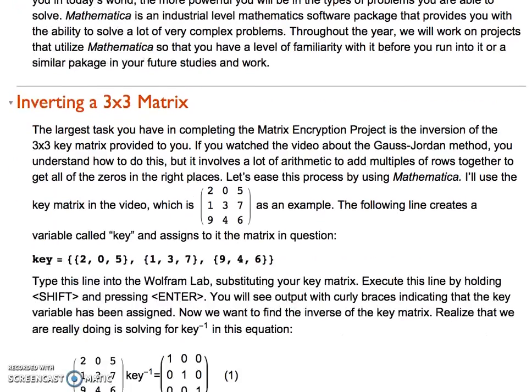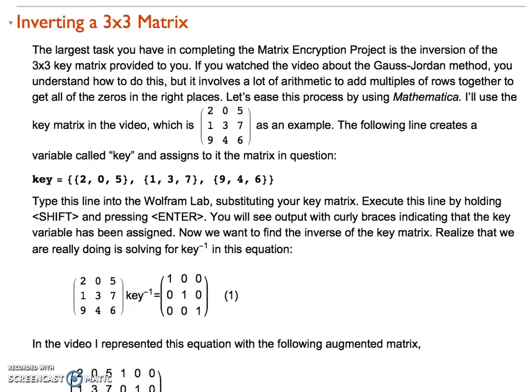Specifically, what we're going to do today is use the Wolfram language to invert that 3x3 key matrix so that we can use the inverted matrix to decrypt our ciphertext. I'm taking the same matrix here, the 205137946 matrix that is in the previous video as an example, but you can use whichever key matrix has been assigned to you and follow the same steps.